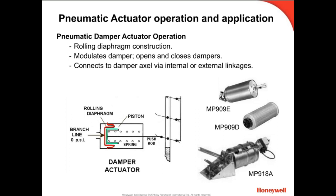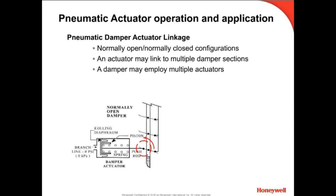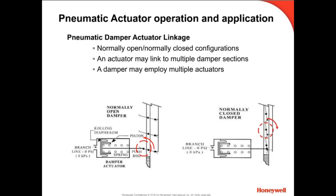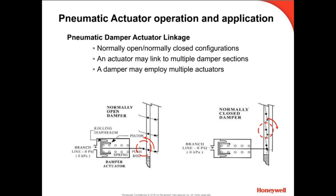A damper is configured normally open if the actuator return spring pulls the damper open. In this diagram, the damper axle is rotated counterclockwise to open, providing the normally open damper configuration. A damper is configured normally closed if the return spring of the actuator pulls the damper closed. In this diagram, the damper blade axle is rotated clockwise to close, providing the normally closed configuration. Because the return spring will return the damper to its normal position on a total loss of air pressure, this position is also referred to as the fail position.